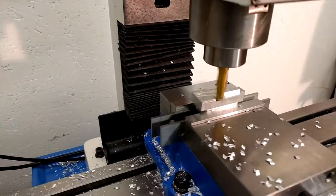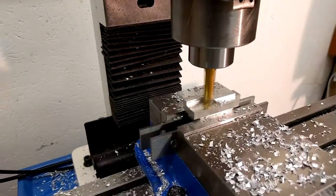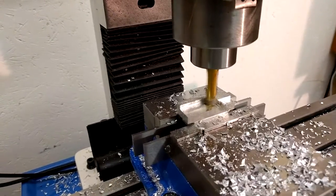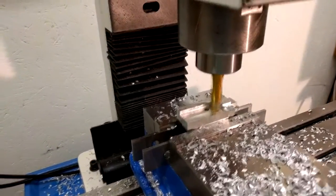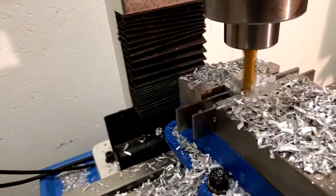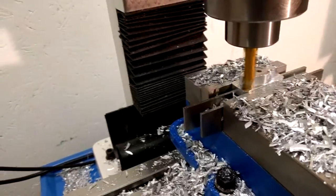Now the part has been flipped over to do the outer side. And I picked up zero on the x-axis by reaching in with a gauge block underneath that overhang. The gauge block provided a known offset. A lot of chips are being produced.